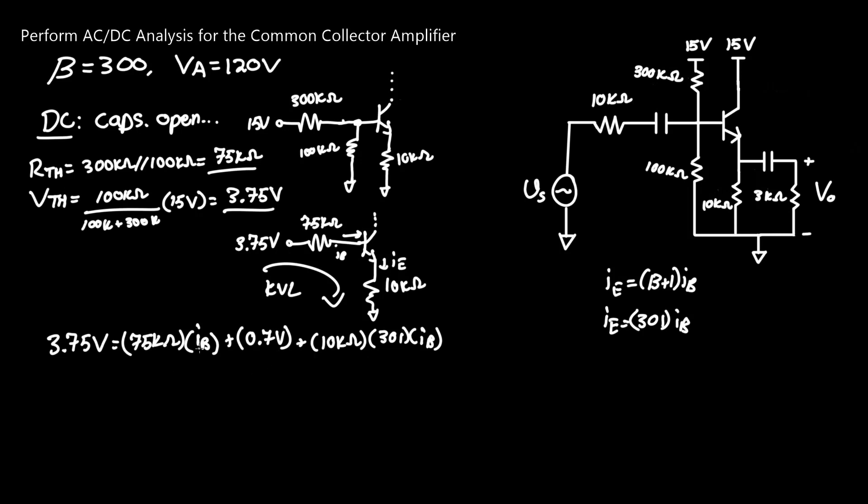Simplifying this by one step, we can subtract both sides by 0.7 volts, which gives us 3.05 volts, equaling IB times 75E3 plus 301 times 10E3 ohms. Dividing this on both sides to isolate IB, we get our current IB equals just about 1 microamp, or 1 times 10 to the negative 6 amps. This is the first parameter we need.